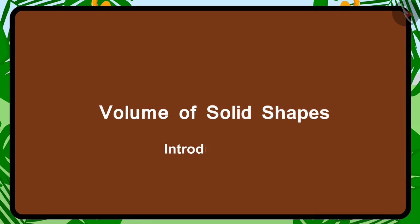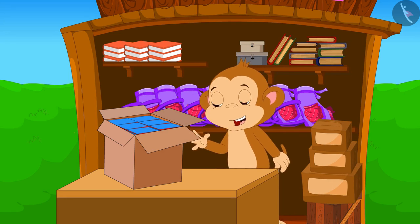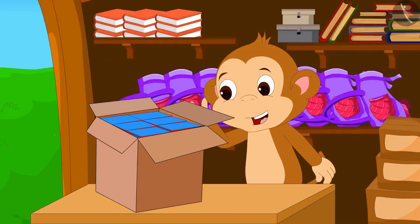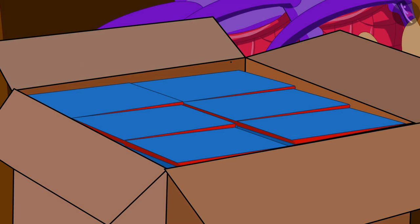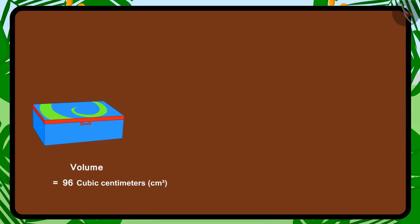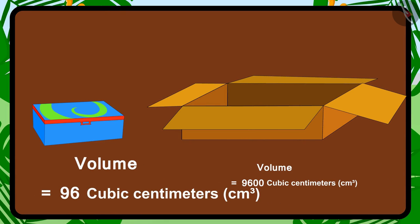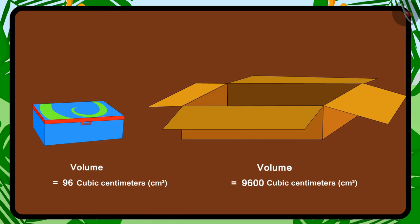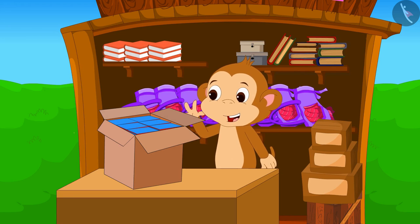Hello kids. In this video, we will learn about volume of solid shapes. In the previous video, we saw how Babban used two boxes and brought 118 compass boxes from the city to sell in his shop. Children, do you remember that the volume of each compass box is equal to 96 cm³? Let's see what Babban is doing with these compass boxes.